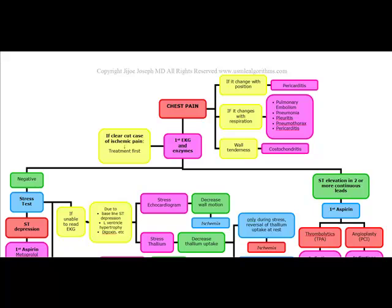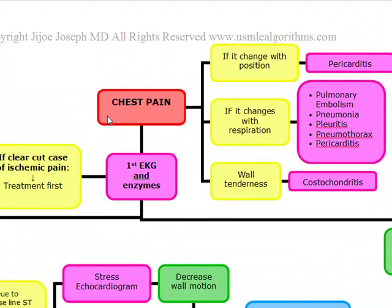Our next topic is chest pain. If a patient comes in with chest pain, the first thing you want to do is determine whether or not this chest pain is due to coronary artery disease or some kind of ischemic cause. You're going to look for risk factors in the stem. Major risk factors include diabetes, which is a coronary artery risk factor equivalent and probably the greatest risk factor; smoking, which is the most preventable; family history; hypertension; and HDL less than 40 in males or less than 50 in females. Minor risk factors include age, obesity, estrogen deficiency, and possibly homocysteinemia.